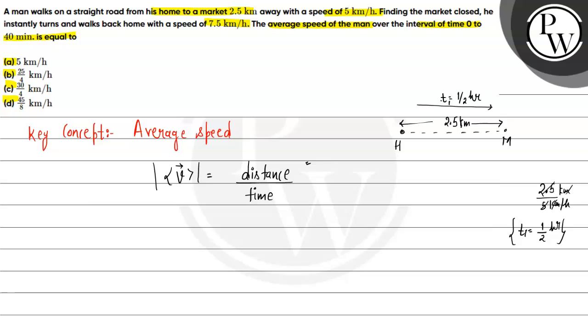So the first time, the distance is 2.5 km. Then the next 10 minutes, we need to see how much distance. This is D2. D2 is velocity times time. Returning home, the speed is 7.5 km per hour. 10 minutes, which is 1 by 6 hour.